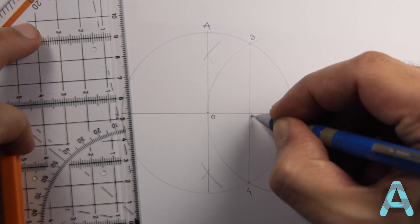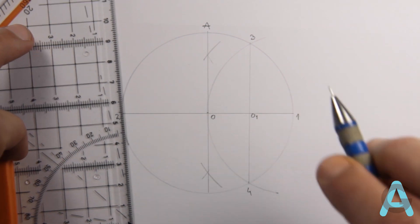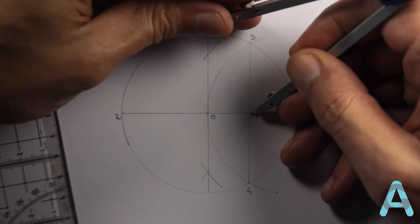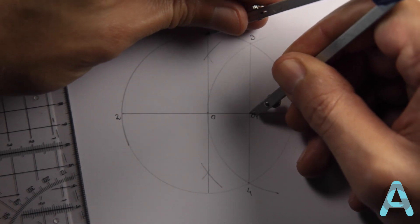Now, you have the point O-1 which is the middle point of the segment O-1. Now, put the needle in O-1 and open the compass to the point A.